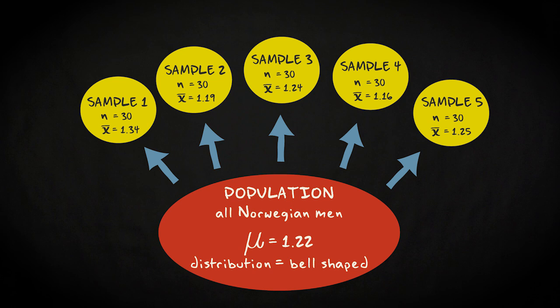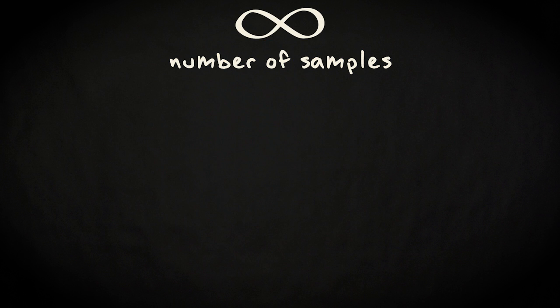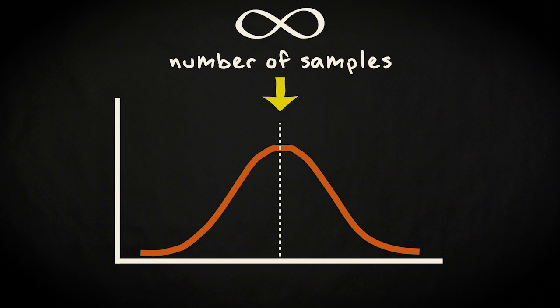If you draw 20 samples, the distribution of the sample means will be approximately bell-shaped. If we do it 100 times, it will be even more strongly bell-shaped. And if we draw an infinite number of samples, the distribution will be perfectly bell-shaped, and the mean will be exactly 1.22 mm, which is the population value.